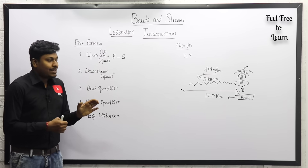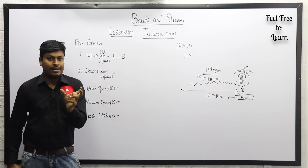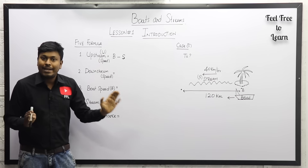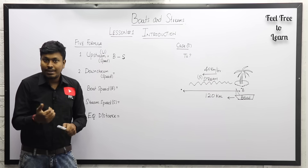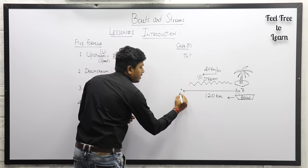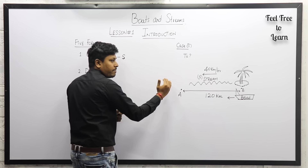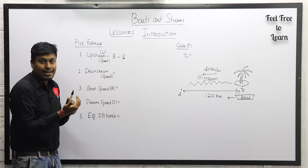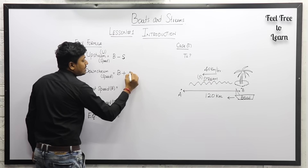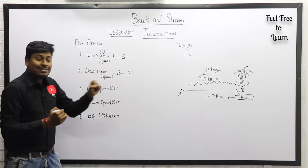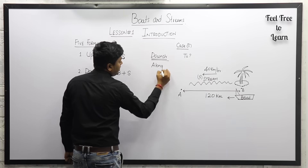Now let's move to case number two. In this case, the boat is at the island and our target is to find the total time taken from point B to point A. Here, the boat is traveling along the stream. There is no opposing force — instead, an additional force pulls in the same direction. This is called downstream, or 'along the stream.'